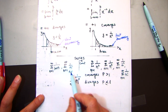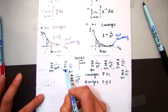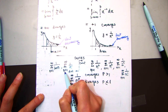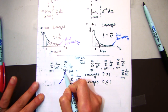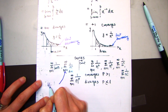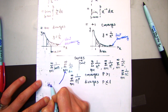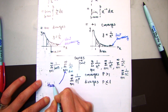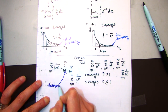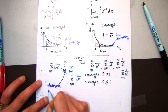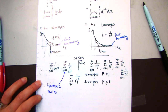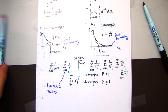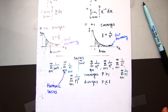So when you have a p-series, if p equals 1, this series has a special name — it's called a harmonic series. The rest of them don't have special names.